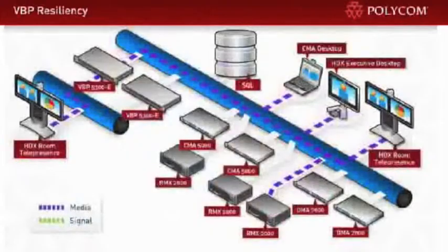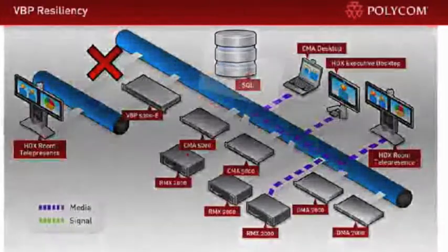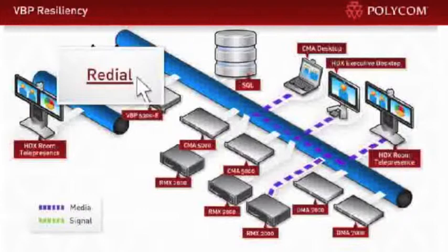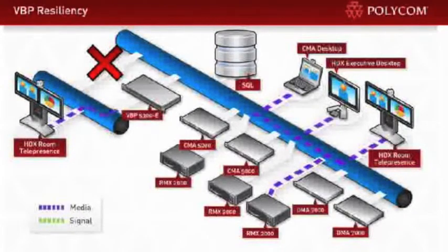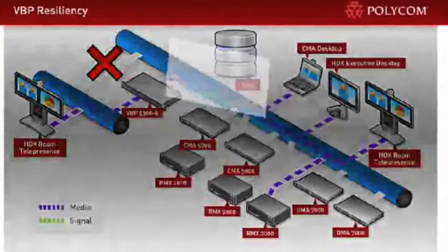Now let's see how the UC Intelligent Core addresses a power failure, network outage, or natural disaster. In this case, we'll lose power to our entire remote access and firewall traversal system. Expectedly, the external participant's call gets disconnected and drops. But what happens if, like most users, they immediately redial? The new call goes through the secondary VBP and is delivered to the next available resource, and back into the call.